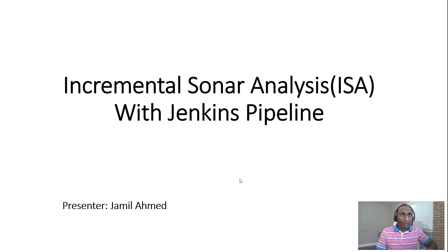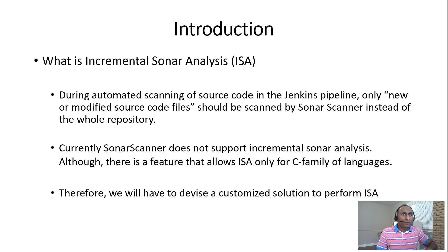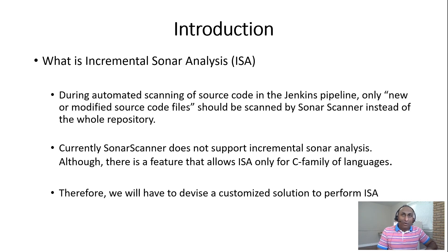Hello everyone. I'm going to discuss how to perform incremental sonar analysis with Jenkins pipeline. What is incremental sonar analysis? The context we are talking about is when a software engineer commits a source code change to the Git repository through a Jenkins pipeline. If the Jenkins pipeline has sonar scanner configured, sonar scanner by default performs scanning of the whole repository code. What we want here is that sonar scanner should perform scanning only on new or modified source code files associated with that particular commit. This is called incremental sonar analysis.